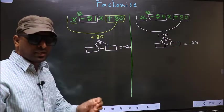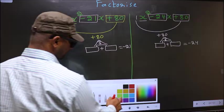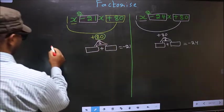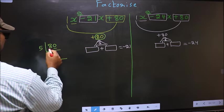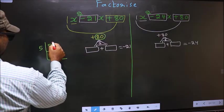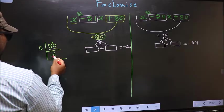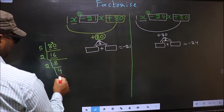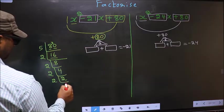To find those two numbers, we take the prime factorization of 80. The last digit is 0, so take 5. 5 once is 5, and 8 minus 5 is 3, carry 30; 5 sixes are 30. Then 16 is 2 eights; 8 is 2 fours; 4 is 2 twos; 2 is a prime number. So the prime factors of 80 are 2, 2, 2, 2, and 5.